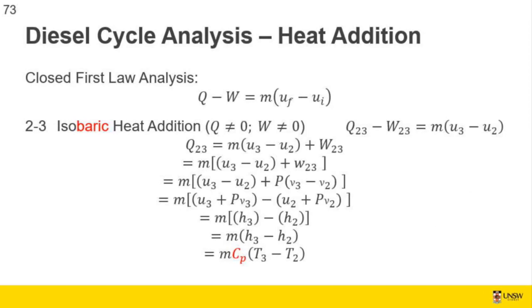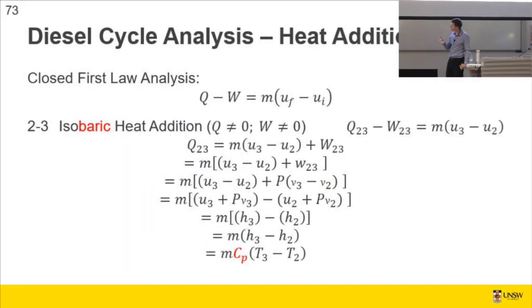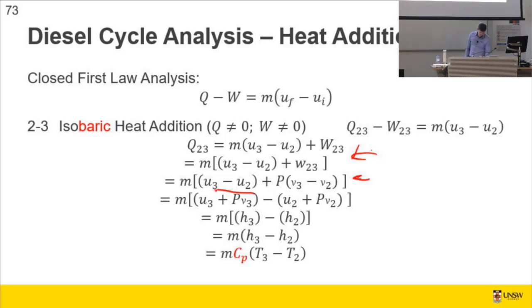So what do we do with our isobaric heat addition? Well, our first law for closed systems would say Q minus W equals delta U. The thing to note with an isochoric heat addition was we said the volume doesn't change. For isobaric, the volume is changing while the process is being undertaken. So both Q and W are non-zero values. So we can't just take one or the other one out. So what do we do? We put the work over on the right-hand side.